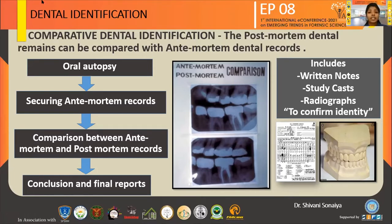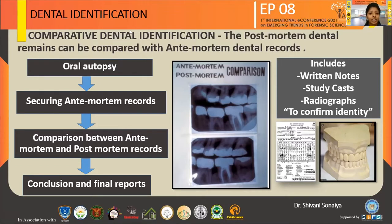If there are any developmental anomalies related to shape or size of the teeth, they are marked. The second step is securing the ante-mortem records. The third step is comparison between ante-mortem and post-mortem records. The last step is conclusion and final reports, where both reports are compared and evaluation is done. The ante-mortem records include written notes, study cast, and radiographs of the patient to confirm the identity.